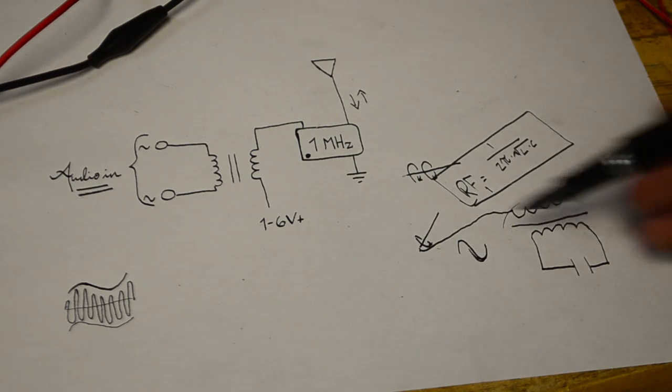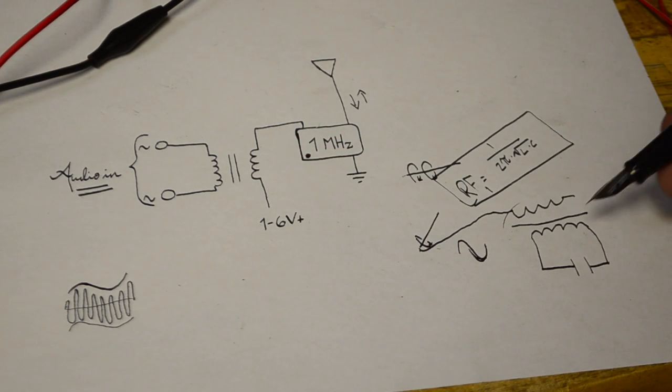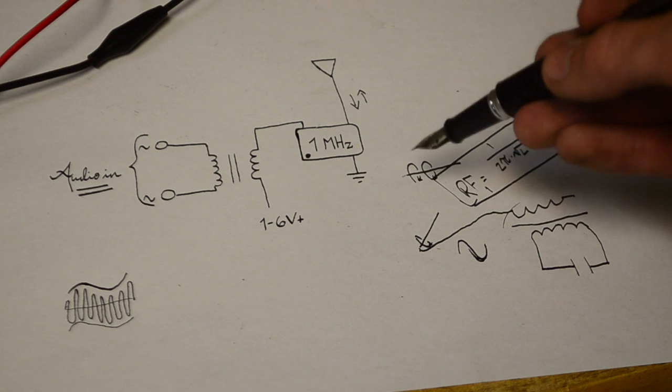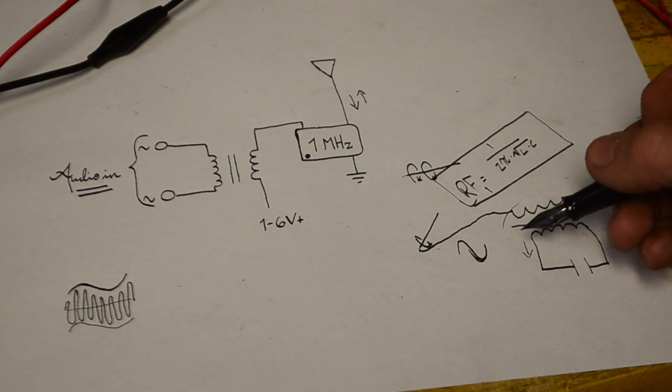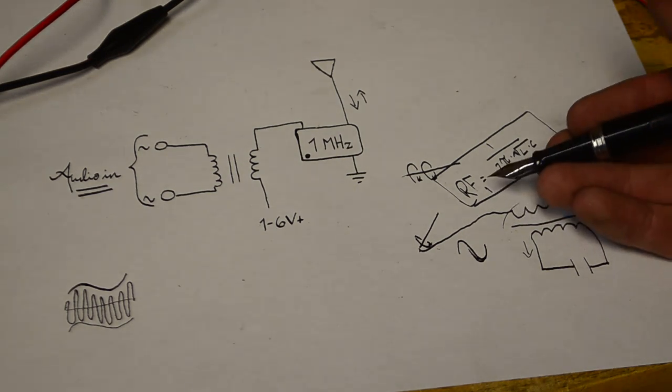And then going back to the receiver over here that slight change in amplitude creates a slight change in the magnetic field being transmitted. And then that slight change in the magnetic field creates a slight change in the current being induced over here. And then when you amplify it up that slight change becomes apparent in the sound you hear.